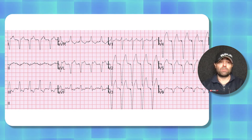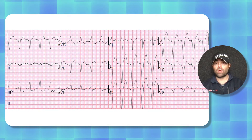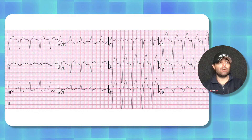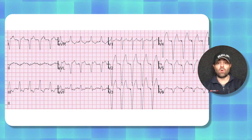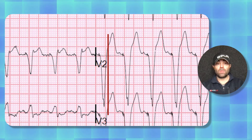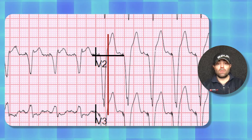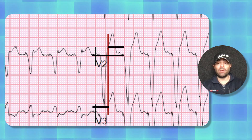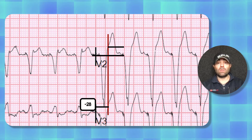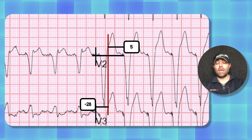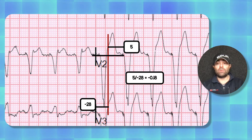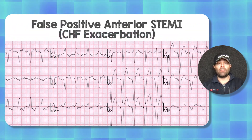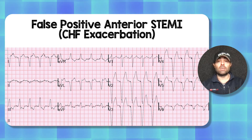Here's another patient presenting with chest pain and shortness of breath. No concordant change could be found on this EKG, so the question becomes: is there discordant change, and does the modified Sgarbossa criteria point to heart alert activation? The red line represents the J point and the black line is the baseline. Counting the little boxes, there are 28 for the amplitude of the QRS and five for the elevation at the J point. Dividing those two gives negative 0.18, which is less than 25% of the QRS amplitude — this ended up being a false positive; the diagnosis was a CHF exacerbation.